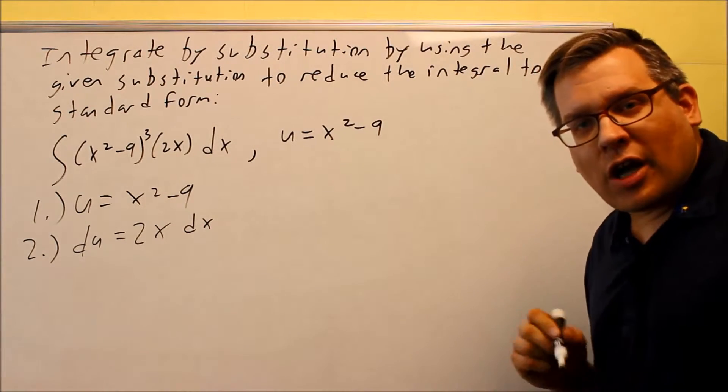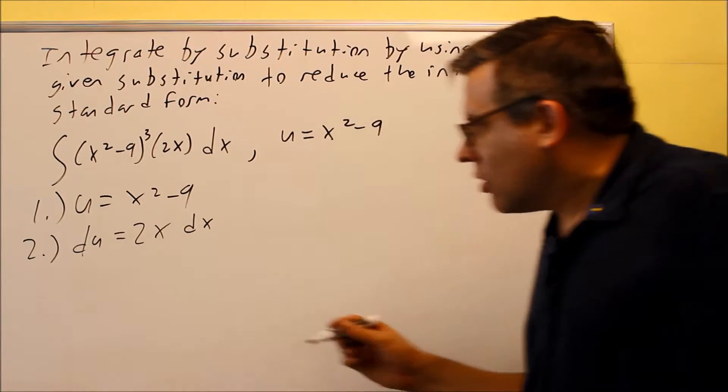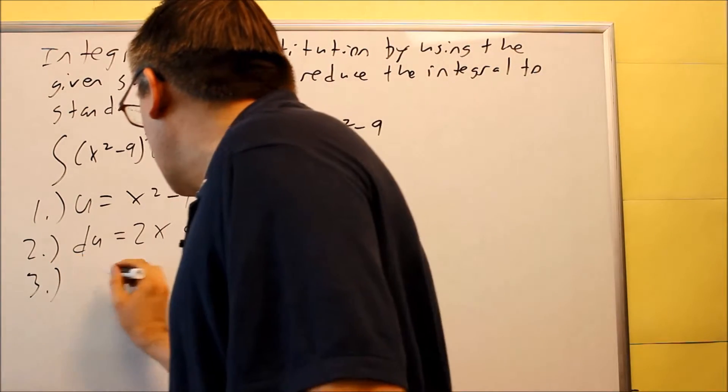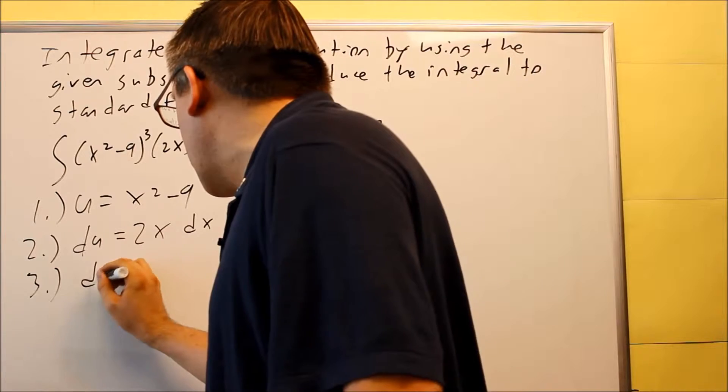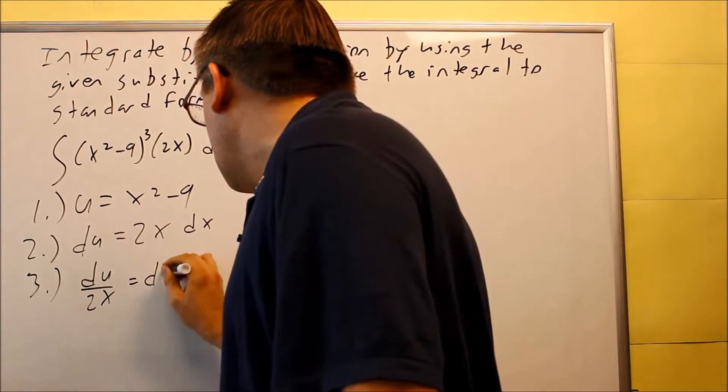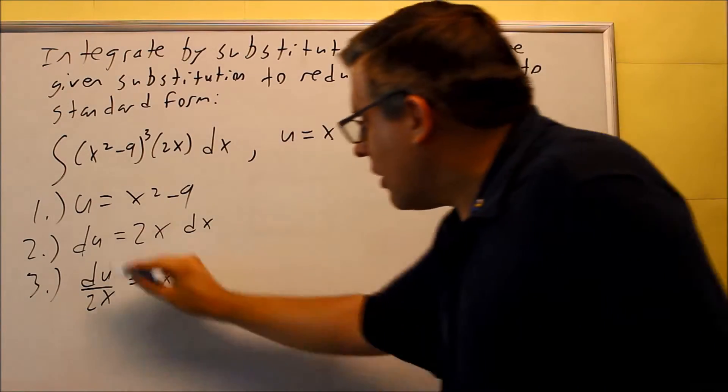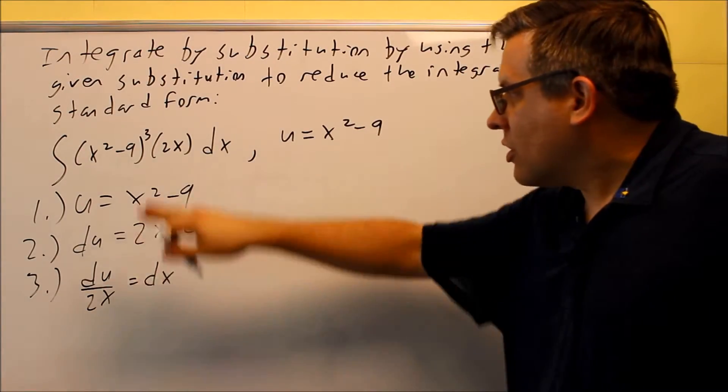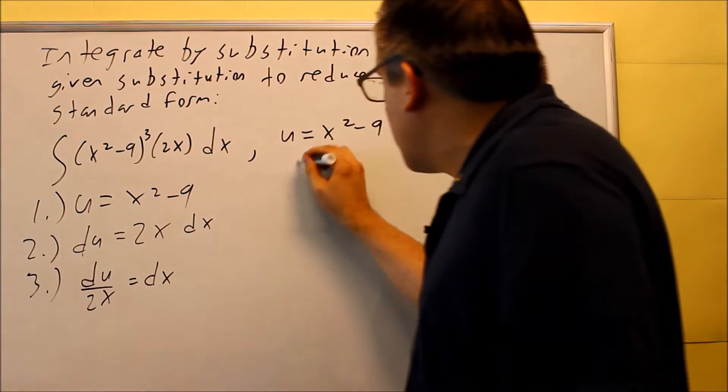Once you have that complete, step 3 is you're going to solve for dx and you're going to substitute it into your equation. So step 3 we have, first if we solve for it, we're going to get du over 2x is going to equal dx.